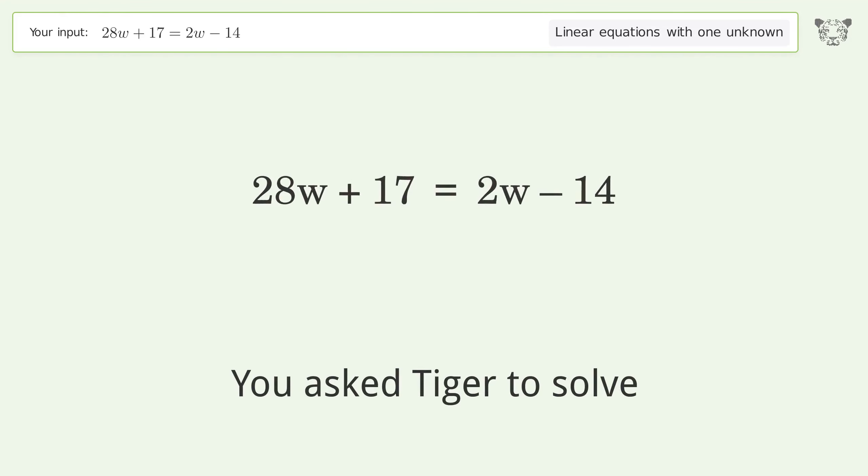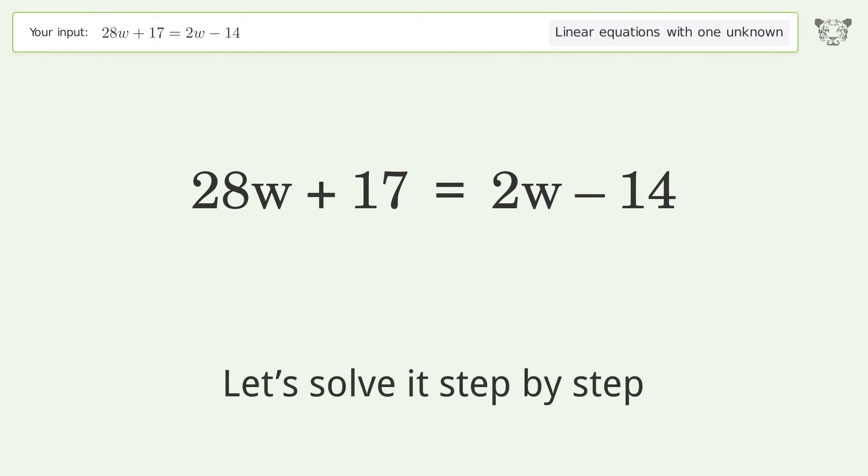You asked Tiger to solve this linear equation with one unknown. The final result is w equals negative 31 over 26. Let's solve it step by step.